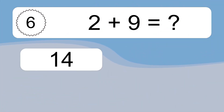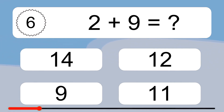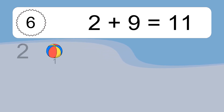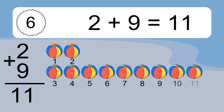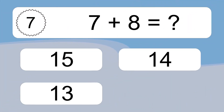2 plus 9 equals what? 2 plus 9 equals 11. Let's count it: 1, 2, 3, 4, 5, 6, 7, 8, 9, 10, 11.